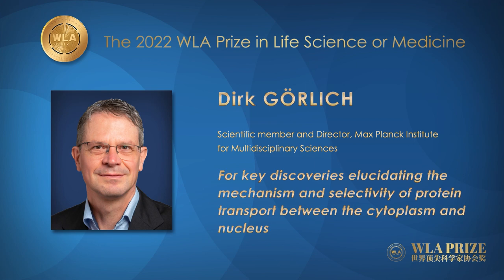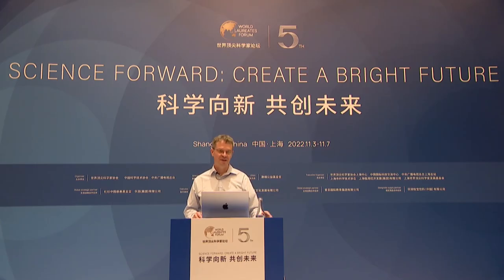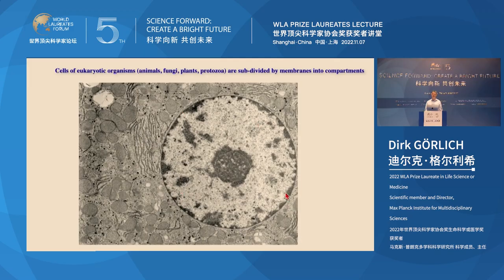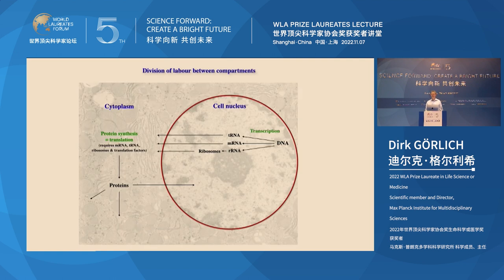Good afternoon and welcome to my lecture on intracellular transport. If we look at a eukaryotic cell — a cell of an animal, a human, or a plant — we see that such cells are subdivided by membranes into compartments. The largest compartment is the cell nucleus, surrounded by the cytoplasm. These compartments are an expression of division of labor: the cytoplasm makes proteins, which are needed both in the cytoplasm and in the nucleus. The nucleus harbors the genomic DNA, transcribes DNA into RNAs, and assembles ribosomes — protein synthesis machines — which need to be exported to the cytoplasm where they function in translation.